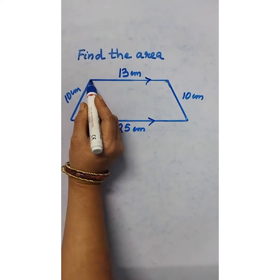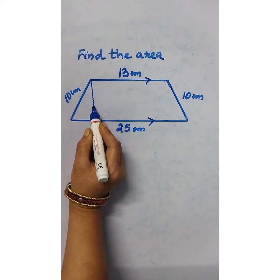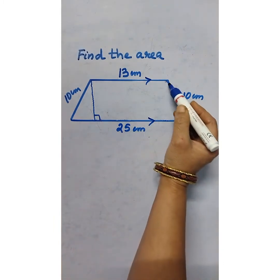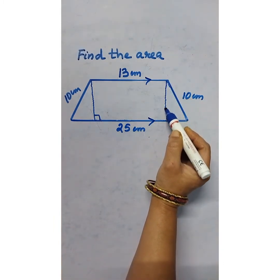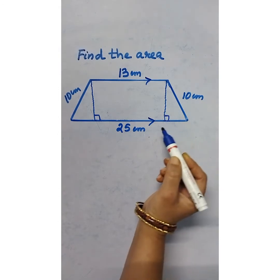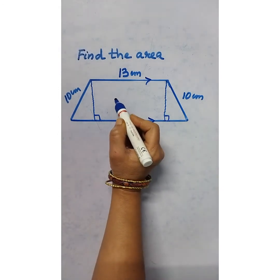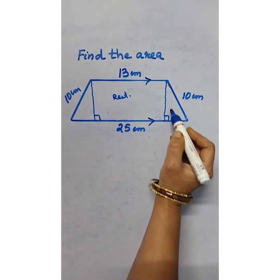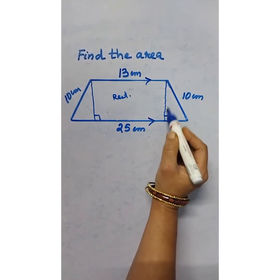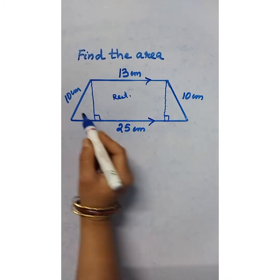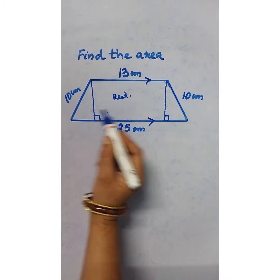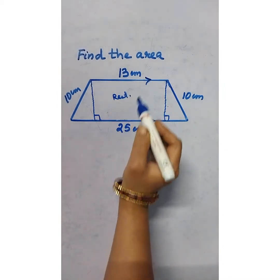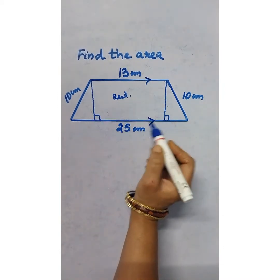Let us draw one perpendicular line from this vertex to the opposite side. Now we are getting one rectangular part, and this is a right triangle, and this is also a right triangle. These two triangles are congruent.